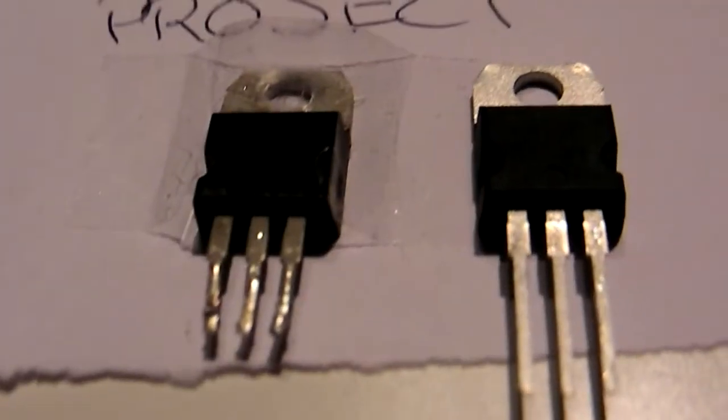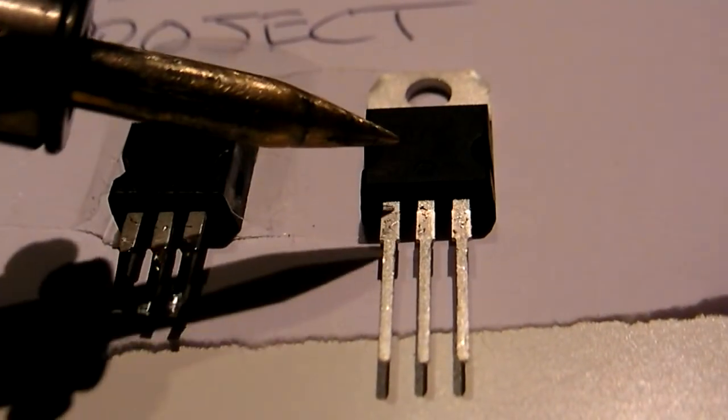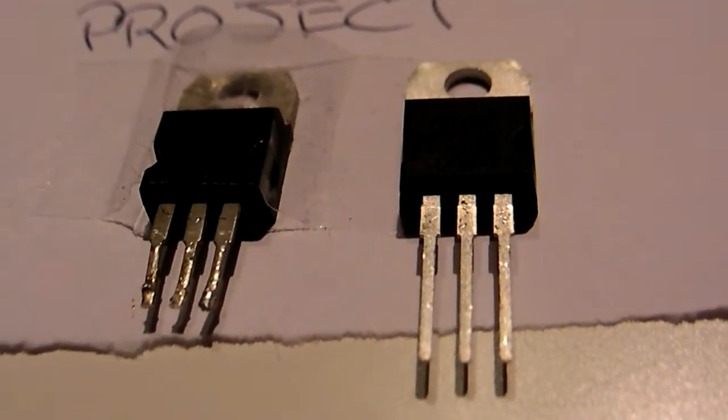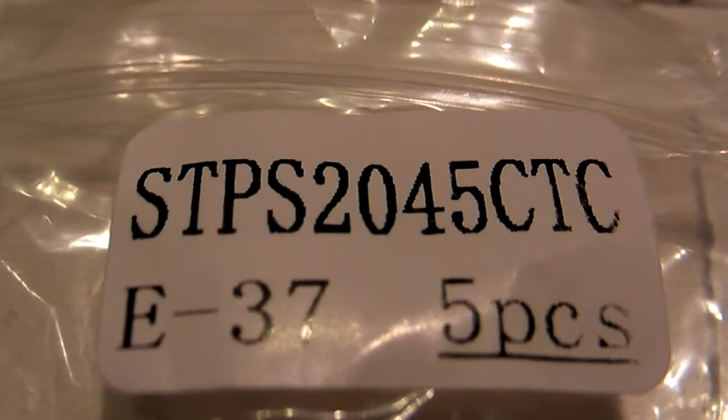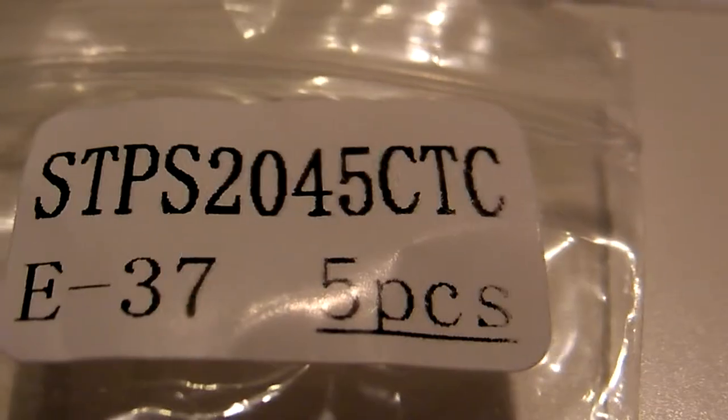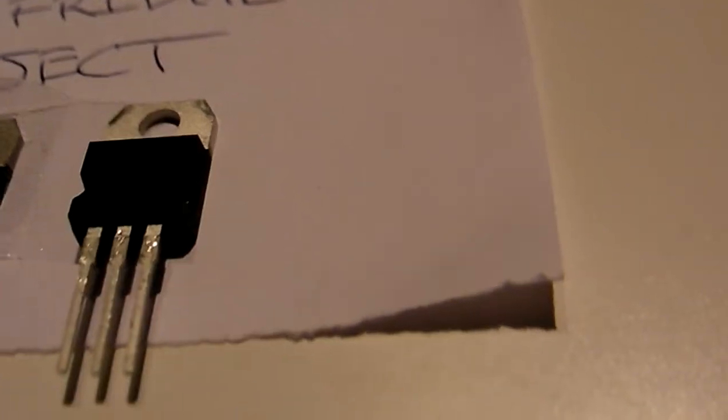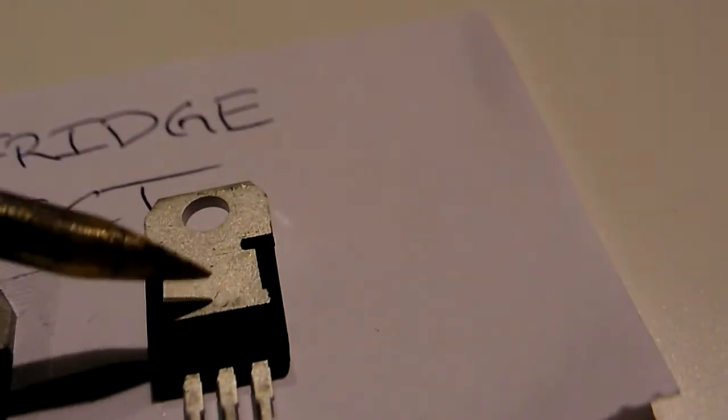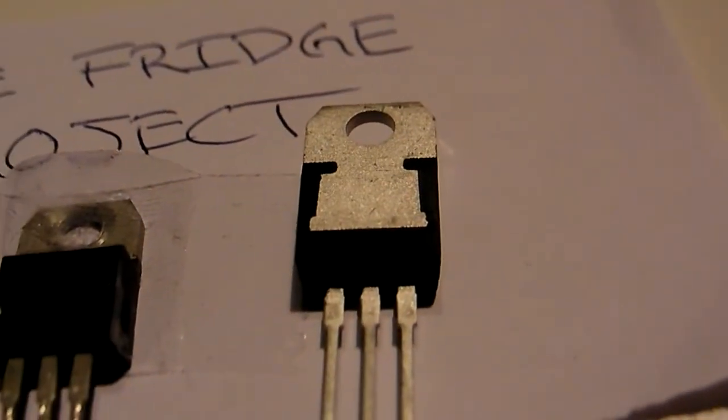So let's have a look at the component in question. Here we go, here's the old one. And here's the new one. This cost about a quarter I think, something like that. So it's not an expensive component to buy. So I bought a bunch. And what I bought were STPS 2045 CTC. The CTC is the package type, so this is, it's got a tab on the back to mount to a heat sink. And this tab is connected to the center pin.